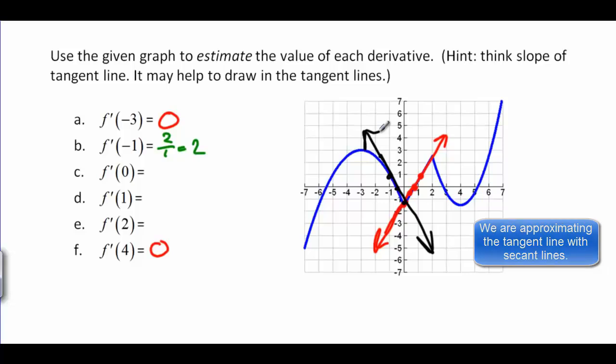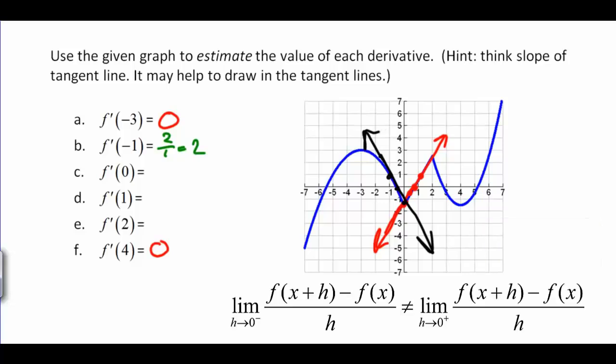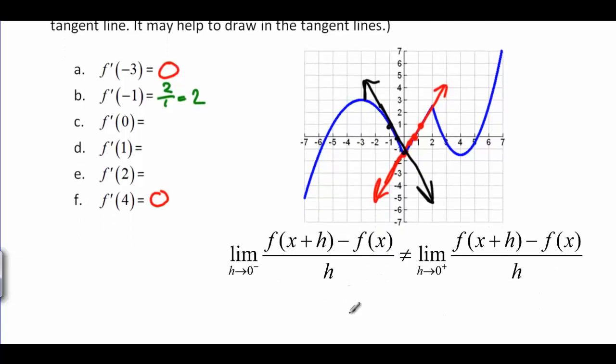And as you can see, those slopes are going to disagree. So the limit as h goes to 0 from the left side is going to not equal the limit as h goes to 0 from the right side. Or we could write this in derivative notation saying that f prime from the left side at 0 does not equal f prime from the right side at 0.